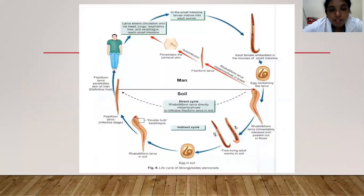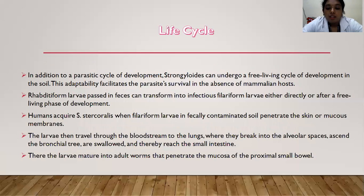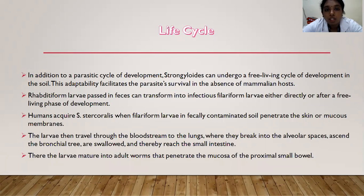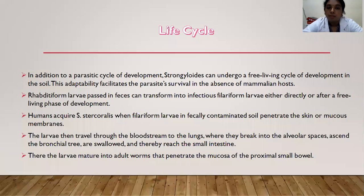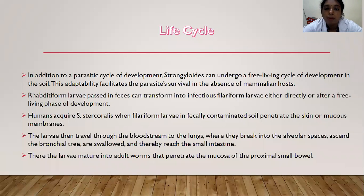In the life cycle of Strongyloides, in addition to a parasitic cycle, it can undergo a free-living cycle of development in the soil, facilitating parasite survival even in the absence of mammalian hosts. Rhabditiform larvae passed in feces can transform into infectious filariform larvae either directly or after a free-living phase of development. Humans acquire Strongyloides stercoralis when filariform larvae in fecally contaminated soil penetrate the skin or mucous membranes. The larvae then travel through the bloodstream to the lungs, break into alveolar spaces, ascend the bronchial tree, are swallowed, and reach the small intestine where they mature into adult forms that penetrate the mucosa of the proximal small bowel.